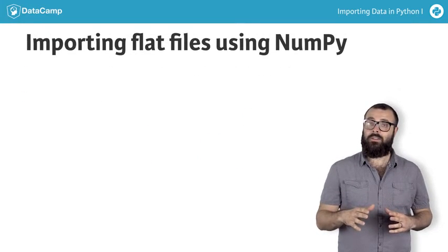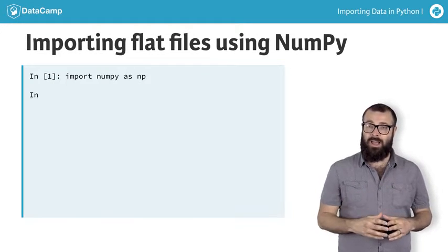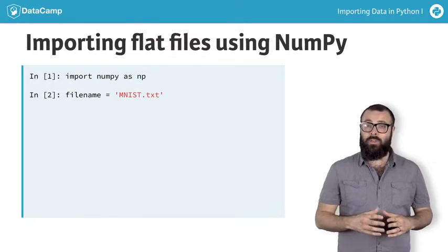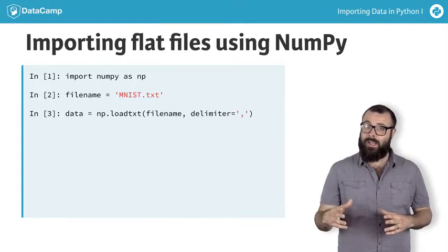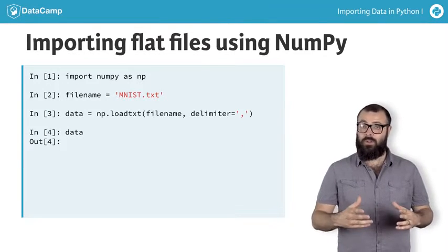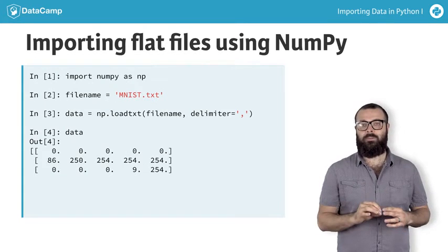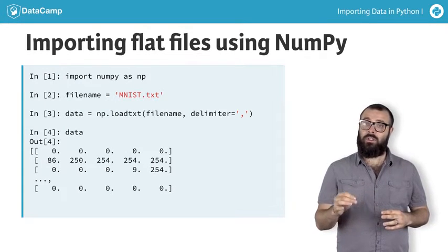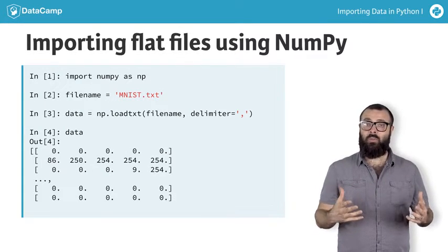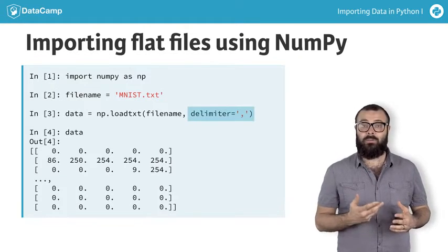To use either of these, we first need to import numpy. We then call loadtxt and pass it the file name as the first argument, along with the delimiter as the second argument. Note that the default delimiter is any white space, so we'll usually need to specify it explicitly.